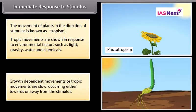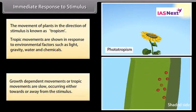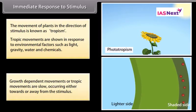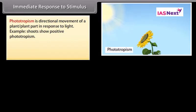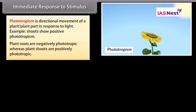Growth dependent movements, or tropic movements, are slow, occurring either towards or away from the stimulus. Phototropism is the directional movement of a plant part in response to light. Shoots show positive phototropism while plant roots are negatively phototropic.